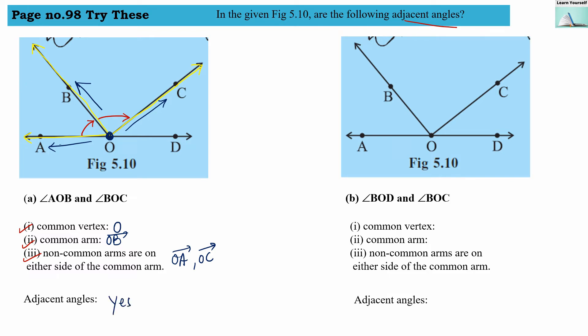Second example: angle BOD and angle BOC. Angle BOD is this complete angle, and angle BOC is this angle. Now let us check all the conditions. First condition: common vertex. Yes, they do have a common vertex between them.